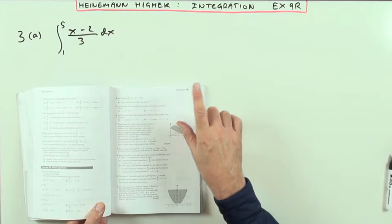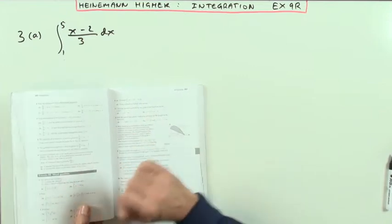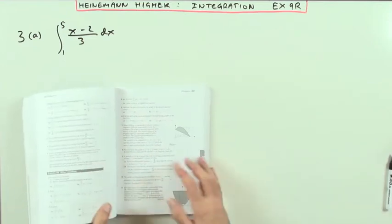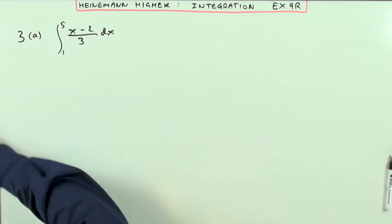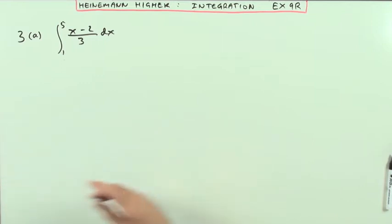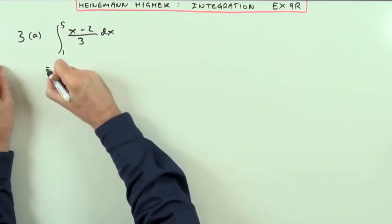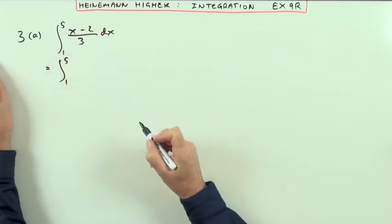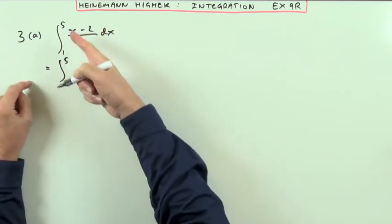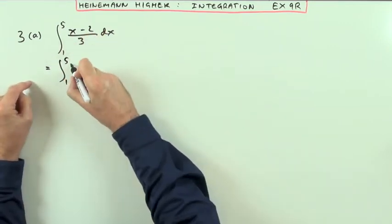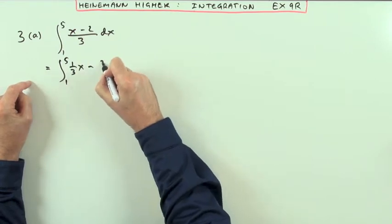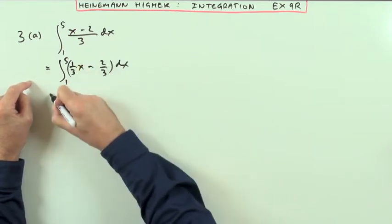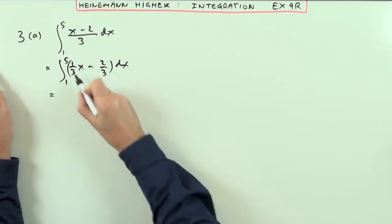We're in Higher chapter 9 on integration, the mixed questions exercise 9, question 3. There are four definite integrals to evaluate. For the first one, I'll just split it into its two terms — they're both being divided by 3 — so I've got a third of x and two thirds. I prefer to see the coefficient separate from the term.